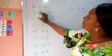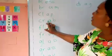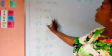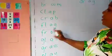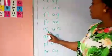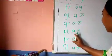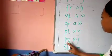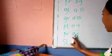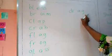We have bl, s. Br, um. Cl, a, p. Cr, a, b. Fl, a, g. Fr, og. Cl, a, s, s. Gr, a, s, s. Pl, ay. Play. Sl, a, p. Dr, a, g. Good.